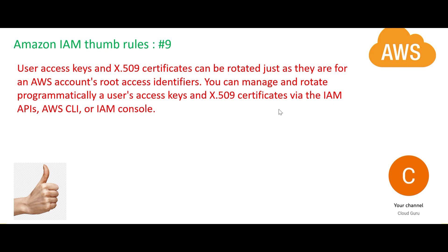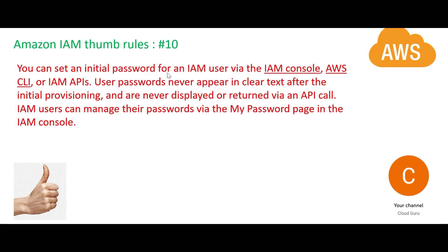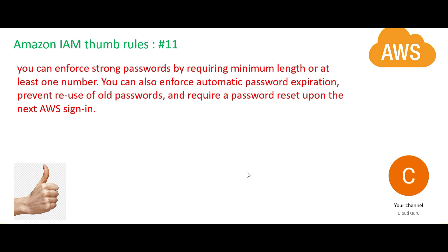Whatever keys and certificates are generated inside IAM, you will have to rotate them at certain intervals. You can rotate them using APIs, CLIs, and the IAM console. You can set an initial password for IAM users through the IAM console or the APIs, and the password will never appear in clear text. Even if you fire API commands in the future, the password will not be returned.